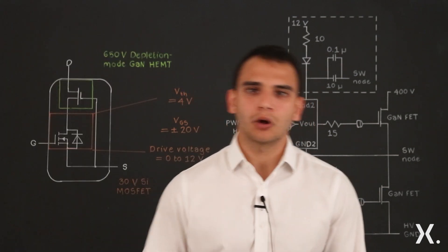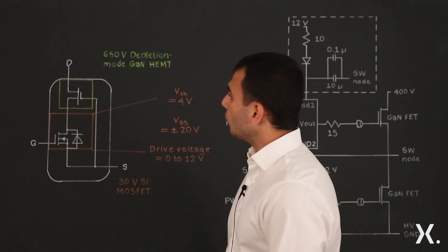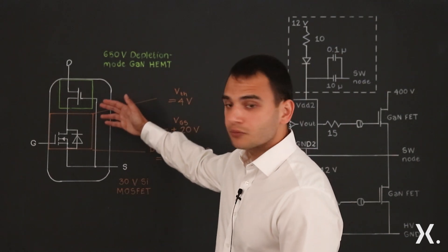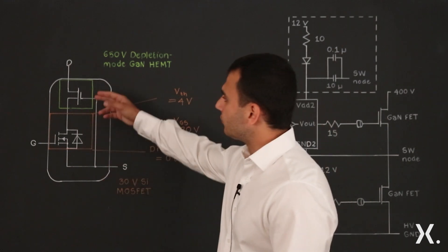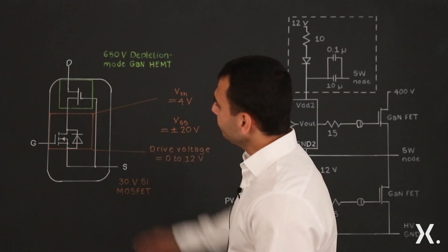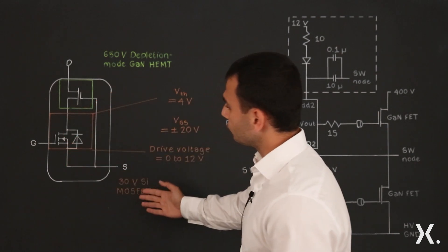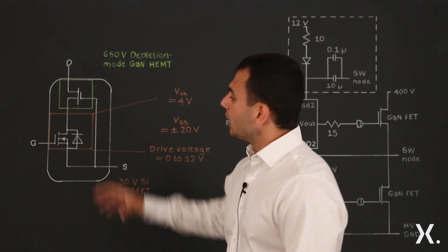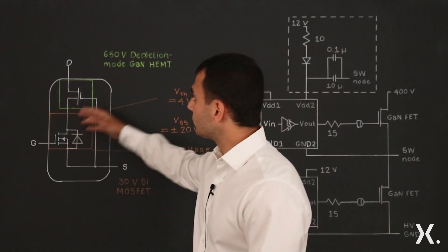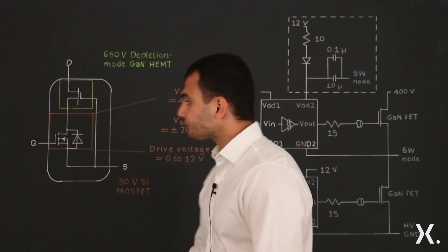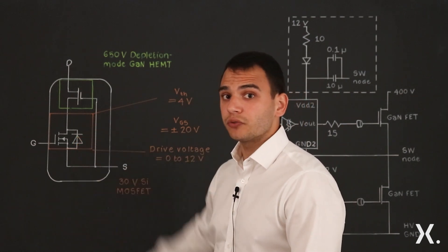Now let me introduce you to our cascode architecture that we use for GaN FETs. We have two dice which are connected in series in the package, where you have our 650 volt depletion mode GaN and our silicon MOSFET, which is a 30 volt rated silicon MOSFET. This 30 volt silicon MOSFET is used as a driver for the 650 volt depletion mode GaN, and because of that you're only driving the 30 volt silicon MOSFET.